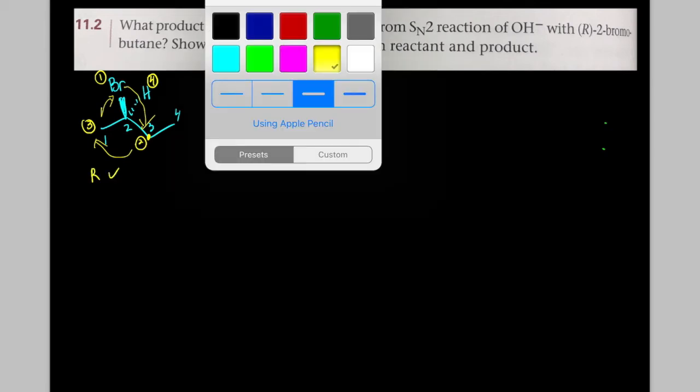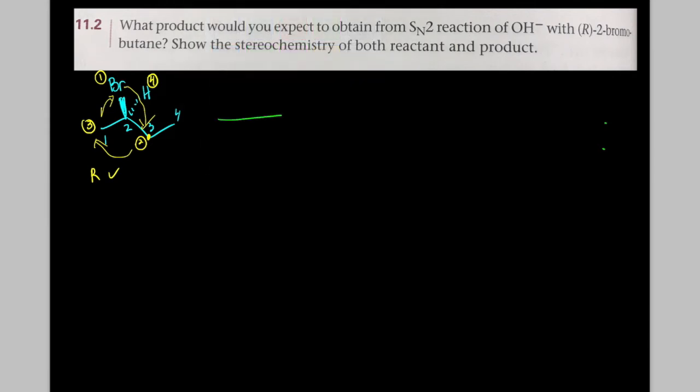Now, when I react this with hydroxide, what happens? Well, the hydroxide, remember, attacks from the opposite side as the leaving group. So this is going to come in from the back side of the molecule and hit this carbon 2. And then this bromine is going to fly towards us in dramatic three-dimensional space.